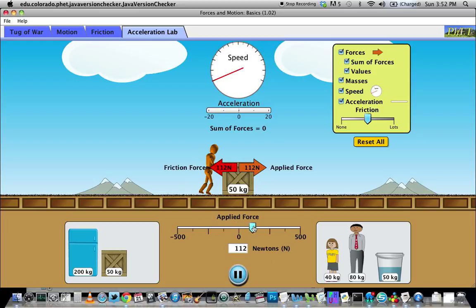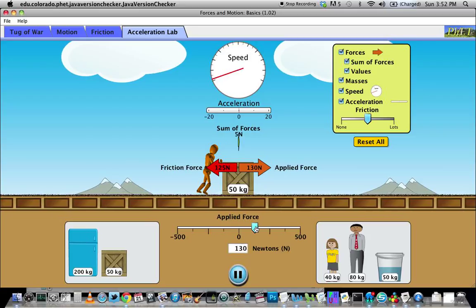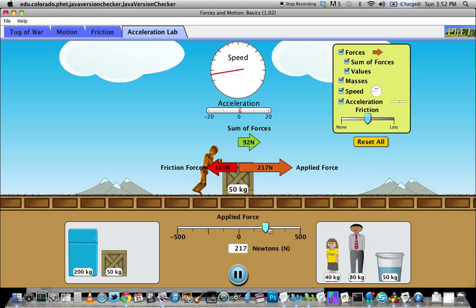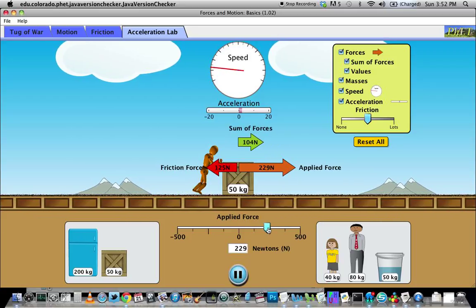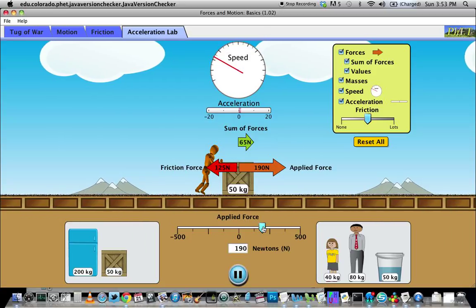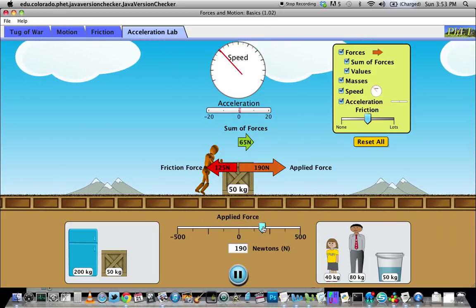You'll notice if you apply a force, that is F person on crate, this applied force, the orange arrow, increases. I notice there's also an interaction between the floor and the crate pointing to the left that they're calling the friction force.